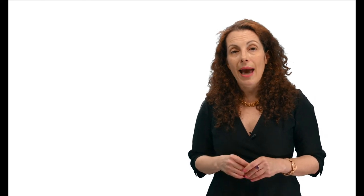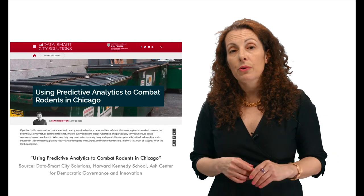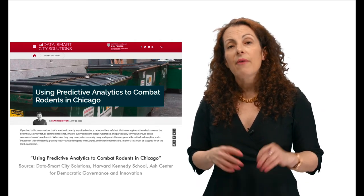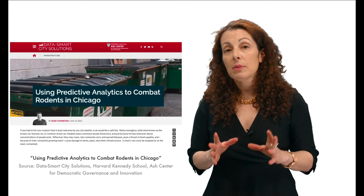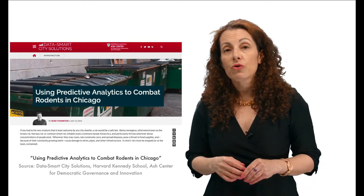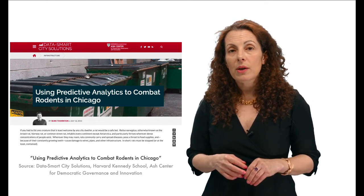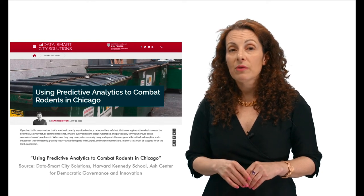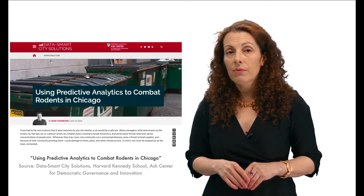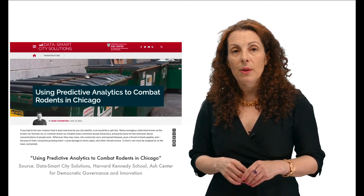Then they built a model to predict spikes in rodent complaints days before the infestation would actually happen. The model was shared with Chicago's sanitation department and deployed in 2013 for a trial period. After running Neal's model that year, the city of Chicago claimed it saw this method to be 20% more effective than traditional baiting methods for catching rats. In July 2013, Mayor Rahm Emanuel announced that as a result of the city's increase in preventive rodent baiting efforts in 2012, resident requests for rodent control services dropped 15% in 2013.